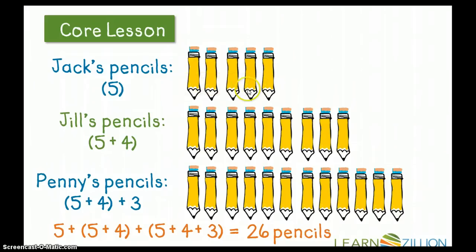So, 1, 2, 3, 4, 5, 6, 7, 8, 9, 10, 11, 12, 13, 14, 15, 16, 17, 18, 19, 20, 21, 22, 23, 24, 25, 26. I am correct.